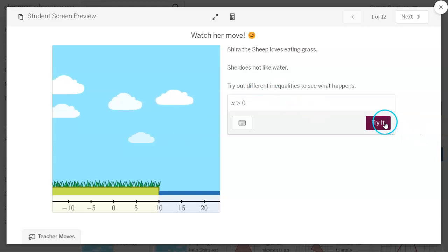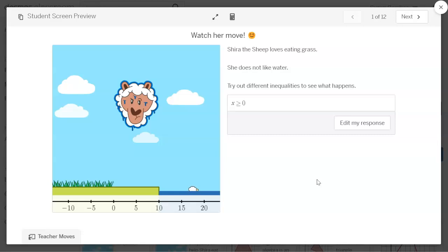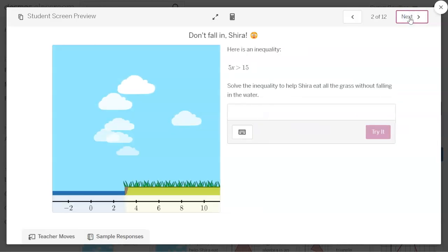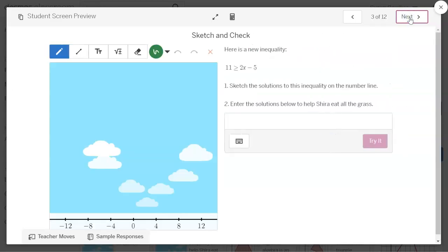But the first part is just the Shira the Sheep activity, it's actually quite cute. So they've given you an inequality and if you try it, Shira is going to come out here and then she's going to fall in the water and Shira does not like falling in the water. So the kids are supposed to try out different inequalities. I'm not going to tell you the solutions or how to do any more than that, but go ahead and just let them be the kids. I would not do too much talking in this part. Let them figure this part out.